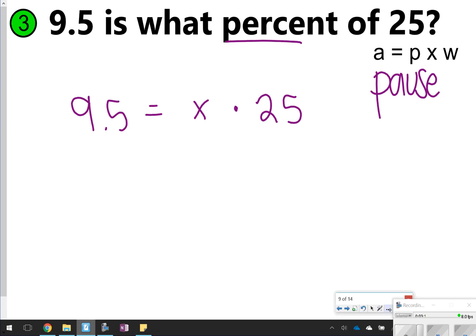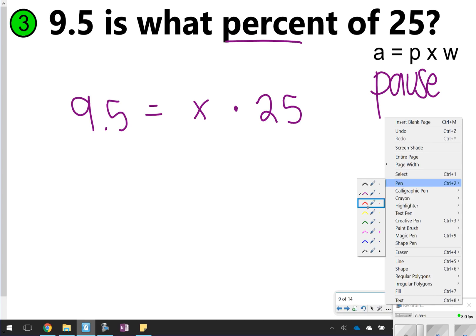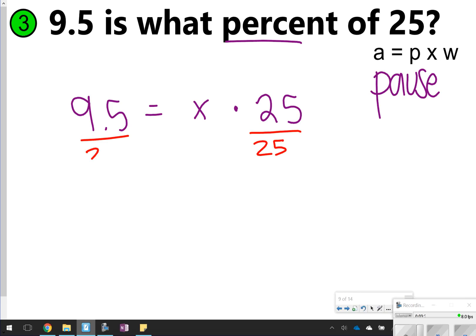So to solve, you're going to have to divide both sides by 25. We'll type into our calculator, 9.5 divided by 25, and we get this decimal, 0.38 is equal to x. Remember, if we're solving for percent, we've got to change it back into percent form. So this answer should be 38%.